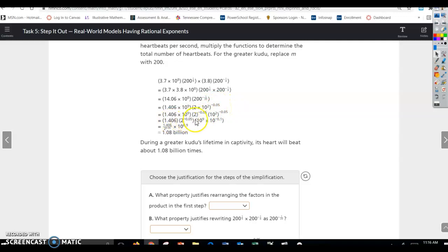And then, just clean that up, simplify it a little bit, and they're going to write this deal right here on this next to last line in scientific notation. So we don't like to have decimals and fractions together, but they're going to approximate this, type this in your calculator, you're going to get an approximate of 1.08 billion, and that is heartbeats. So during a greater kudu's lifetime in captivity, its heart will beat about 1.08 billion times. So that's a lot of heartbeats.